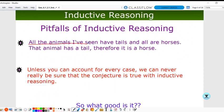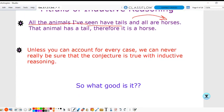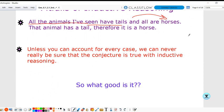We've concluded that all animals with tails have to be horses, but is that true? Can you think of a counterexample? I can think of a dog that has a tail, a cat that has a tail. They're not horses, but they are animals with tails. You have to be careful about using inductive reasoning for everything. Unless you can account for every case, you can never be really sure if this conjecture is true.